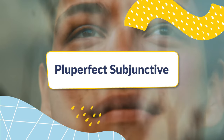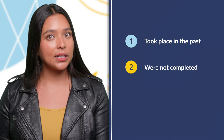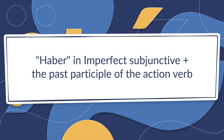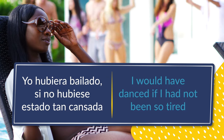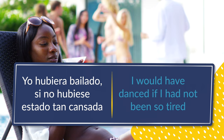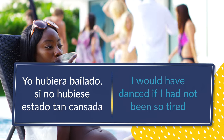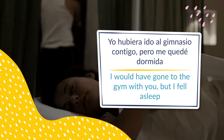Next, we have the pluperfect subjunctive. This one is used to talk about actions that took place in the past which were not completed, and we regret not having them done. The formula is haber in imperfect subjunctive, plus the past participle of the action verb. For example: 'Yo hubiera bailado si no hubiese estado tan cansada' — 'I would have danced if I had not been so tired.' And: 'I would have gone to the gym with you, but I fell asleep.'